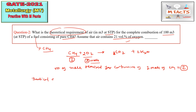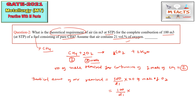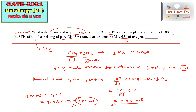Using the formula: theoretical air = (100/21) × moles of O2 required = (100/21) × 2 = 9.52 m³ per m³ of CH4. For 100 m³ of fuel, we multiply by 100: 9.52 × 100 = 952 m³ of air required at STP. So 952 m³ is the correct answer.